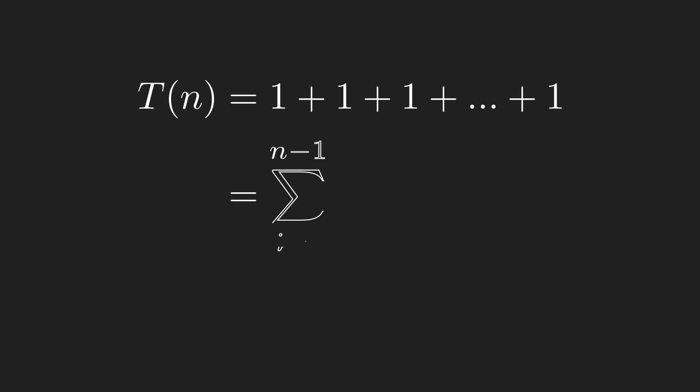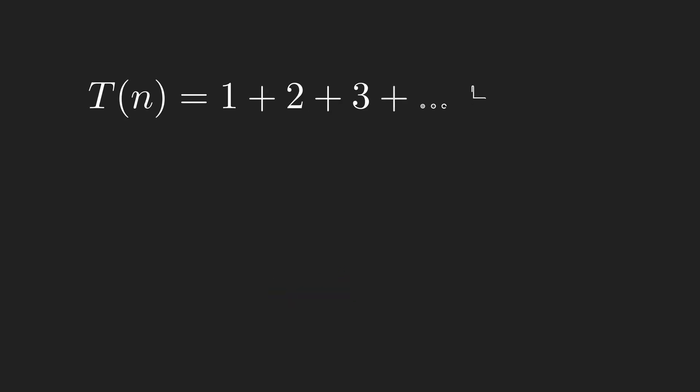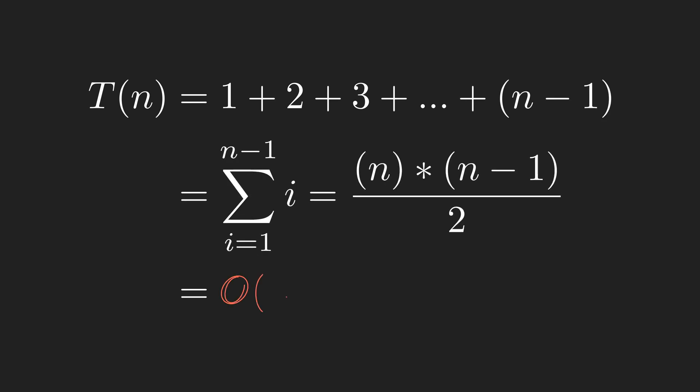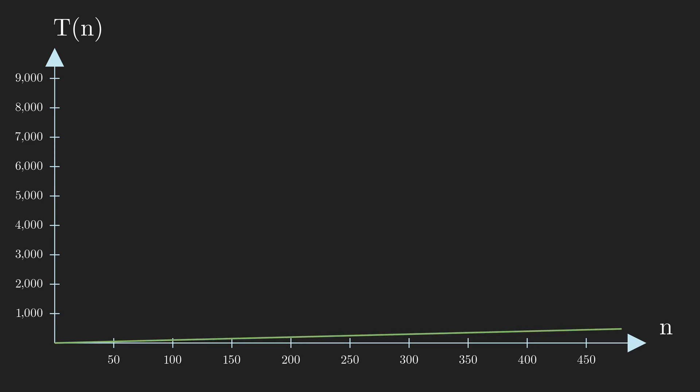Let's count the required number of comparisons and name it T(n). If an array is already sorted, in each iteration we only need to compare an item with one item, so this case requires n-1 comparisons, which is in the order of n. The worst case is when an array is in reverse order — we have to compare each item to all items before it, which is in the order of n². Insertion sort is efficient for small arrays, but for bigger ones it becomes quite an inefficient algorithm.